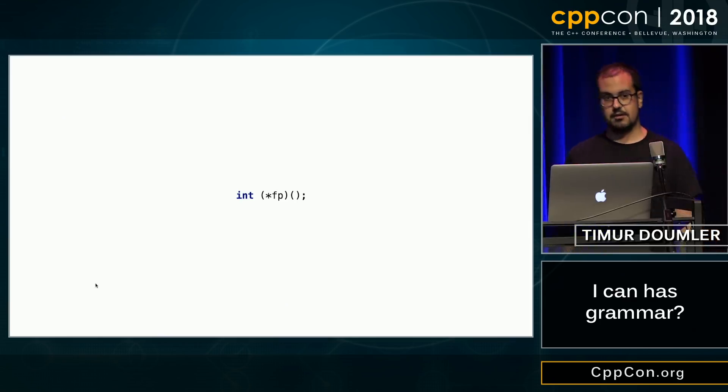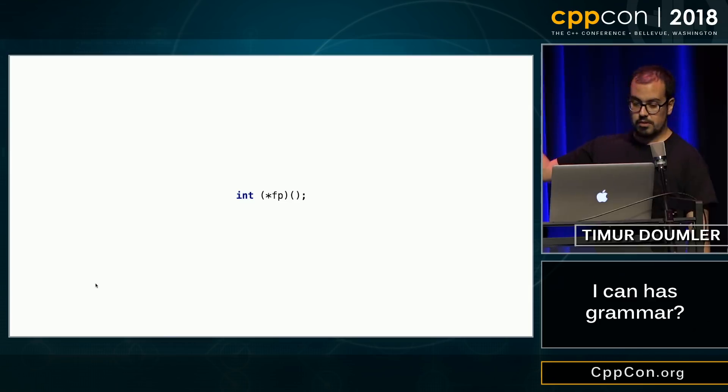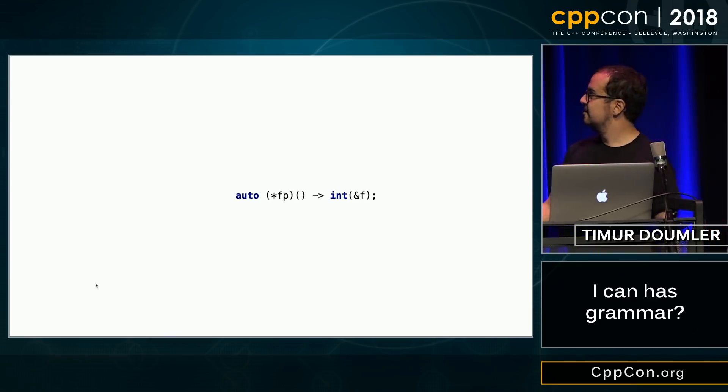Let's, for example, take a function pointer, which also has lots of parentheses. This is, of course, modern C++. We have to write a trailing return type. That's much better. And because the function pointer is a variable, you can initialize it. You can put the initializer in parentheses. That's great. Most parsers will just say no. But, you know, it's valid.